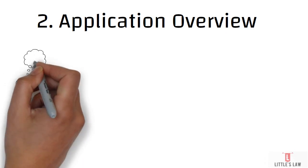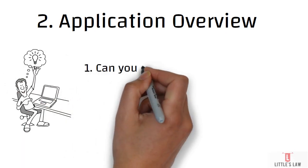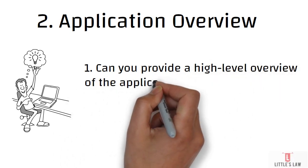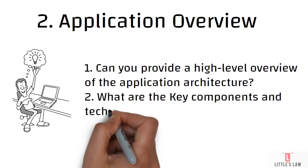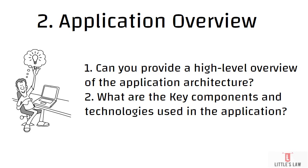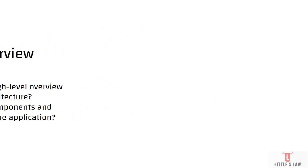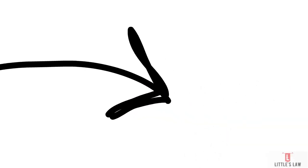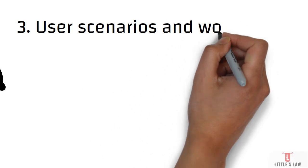The second question covers the application overview. The first question here is: can you provide a high-level overview of the application architecture? You should understand whether it's on-premise or in the cloud, what the web server, app server, and database server are, and how they are configured. You should also identify the key components and technologies used, such as whether it's built on Java, .NET, Python, or other frameworks.